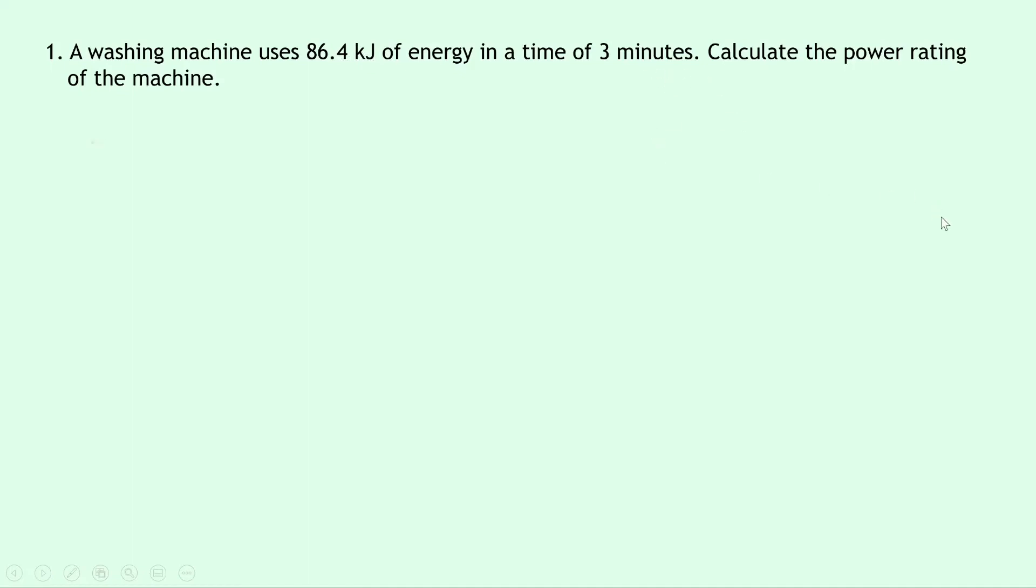So writing down what we know from the question, we're trying to find the power p, we know that energy e is 86.4 kilojoules, which is the same as 86.4 times 10 to the 3 joules, and the time t is 3 minutes, so we need to multiply 3 by 60 to get the number of seconds in that, so that's 3 times 60 is 180 seconds.